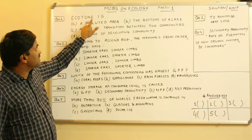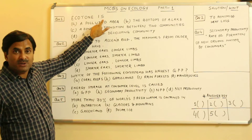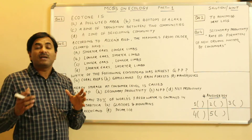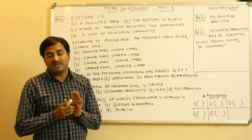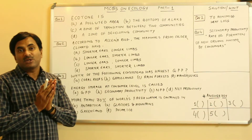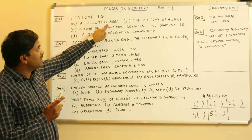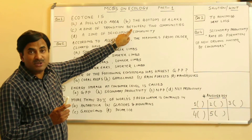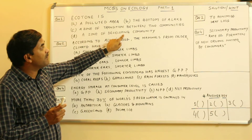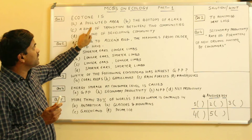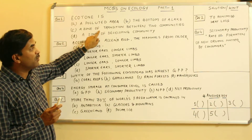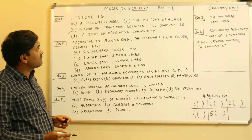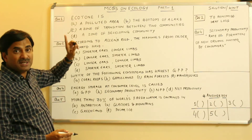The first question is: what is an ecotone? This is a popularly used word in ecology. Ecotone is nothing but a transition zone between two communities. You must know that ecotone is a zone of transition found between two communities — not a polluted area, not the bottom of a lake, and not a zone of a developing community.